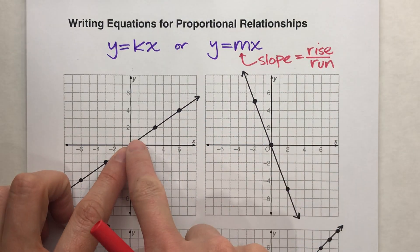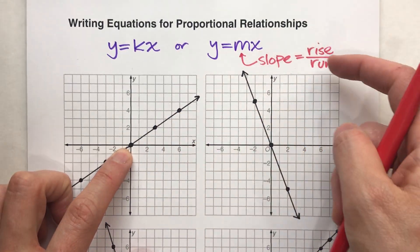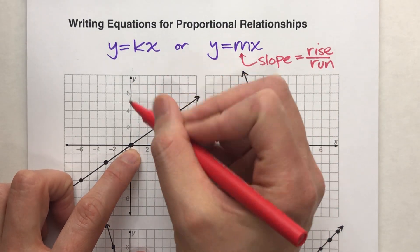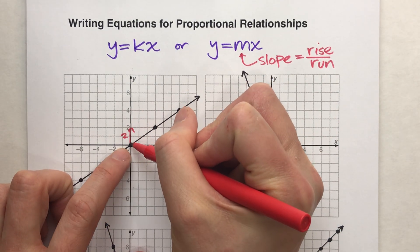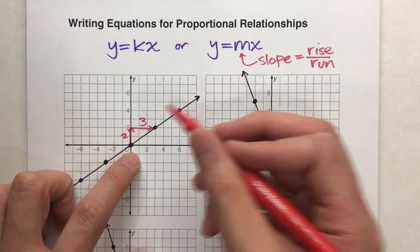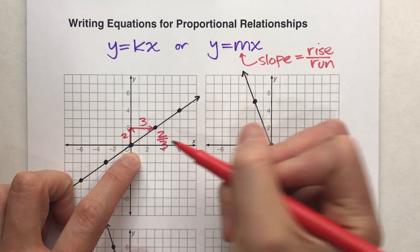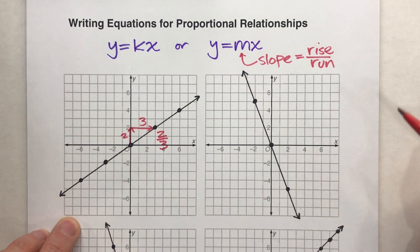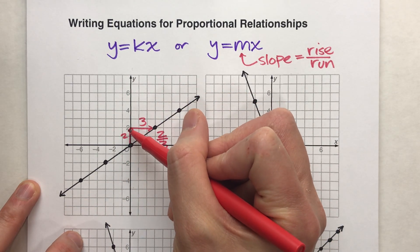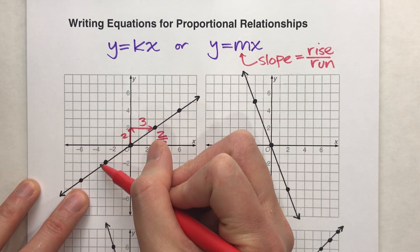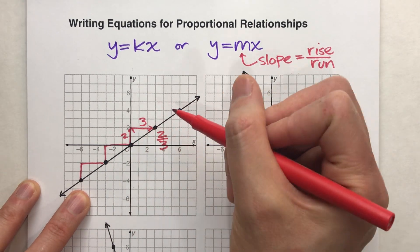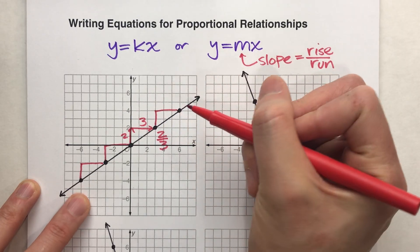Pick any two points, and moving from left to right, figure out how much up you have to go and how much to the right you have to go. For example, from this point to this point, notice I have to go up two units and to the right three units. So my slope is 2 over 3. And notice, it doesn't matter which two points you pick — no matter which two points, it'll always be up two units over three.